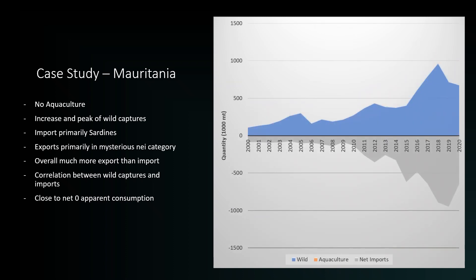The next chart shows wild captures and net imports. Net imports are calculated by subtracting exports from imports, and the negative values here show that more seafood is being exported from the country than imported. Net imports also clearly have a correlation with quantity of wild capture seafood. The last chart shows wild capture, net imports, and total apparent consumption. Apparent consumption is calculated by adding all production from wild capture and aquaculture, adding imports, and subtracting exports. Apparent consumption for Mauritania is balancing around zero — it may be negative or positive, but either way it is much less than either the net imports or captured quantities by themselves.